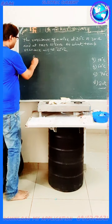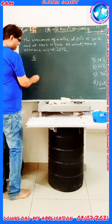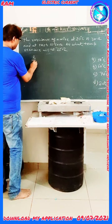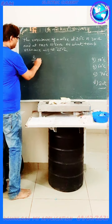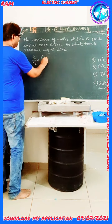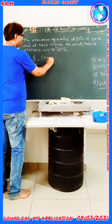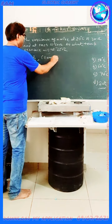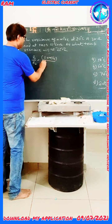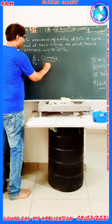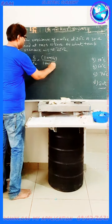We know that R1/R2 = (1 + αT1) / (1 + αT2), which is the formula we will apply here.